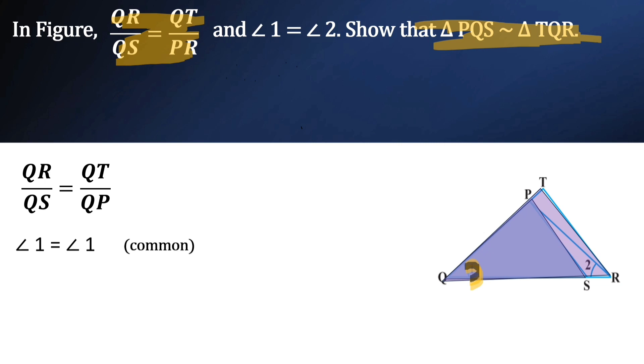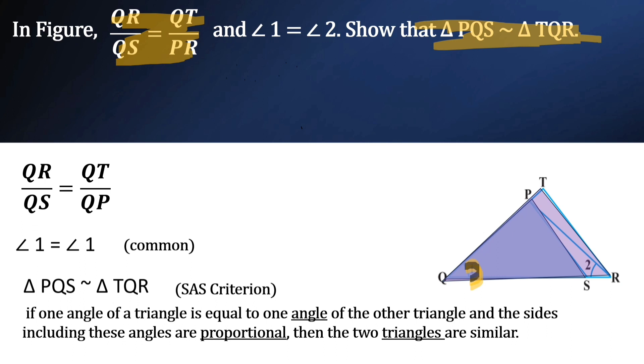So now we can say triangle PQS is similar to triangle TQR because of SAS criterion. What is SAS criterion? If one angle of a triangle is equal to one angle of the other triangle and the sides including these angles are proportional, then the two triangles are similar. Hence proved.